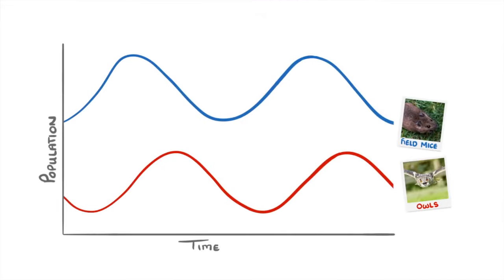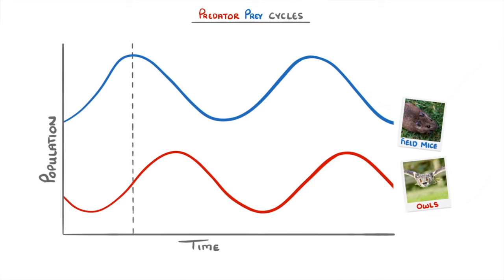One of the most important concepts in ecology is the idea that organisms all interact and influence each other. We can see this if we look at this graph, which shows how the population of field mice — a type of prey — and owls, a type of predator, vary together over time. We call this type of graph a predator-prey cycle. The populations of both species cycle up and down, but the change in the predator population always lags behind that of the prey very slightly. If you draw a line you can see that the mouse population peaks here, but the owl population doesn't peak until a bit later.